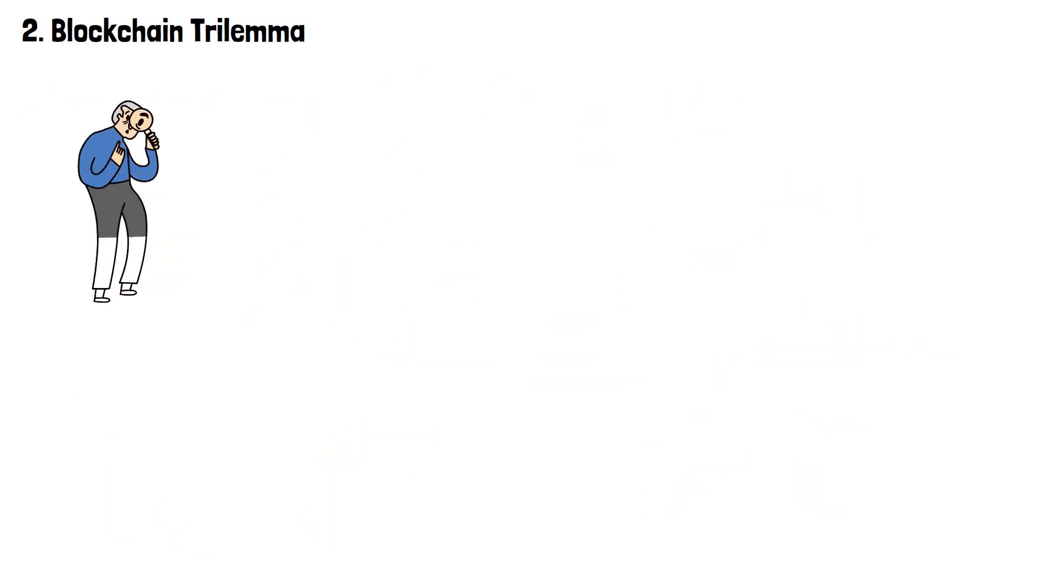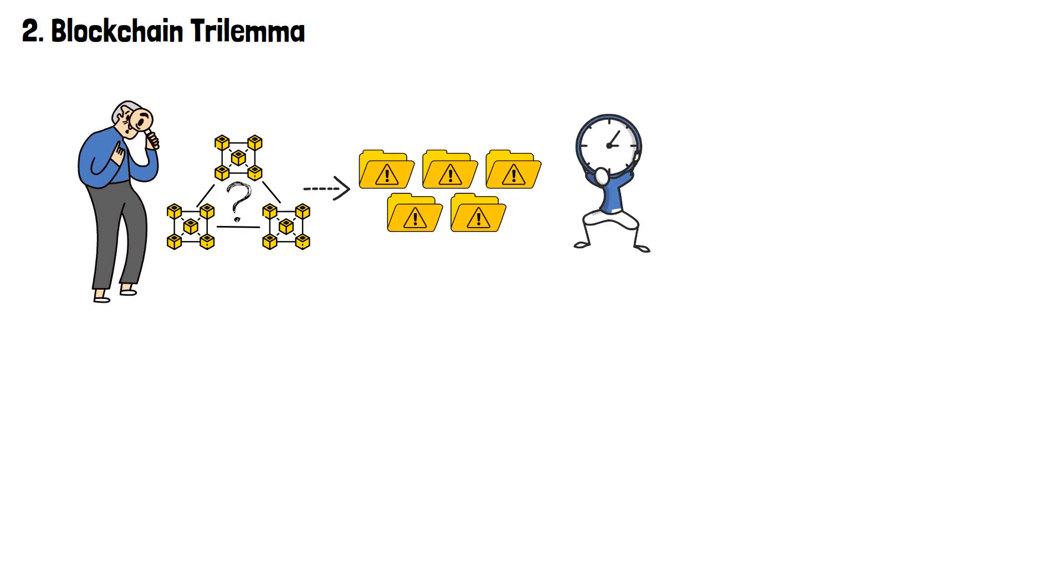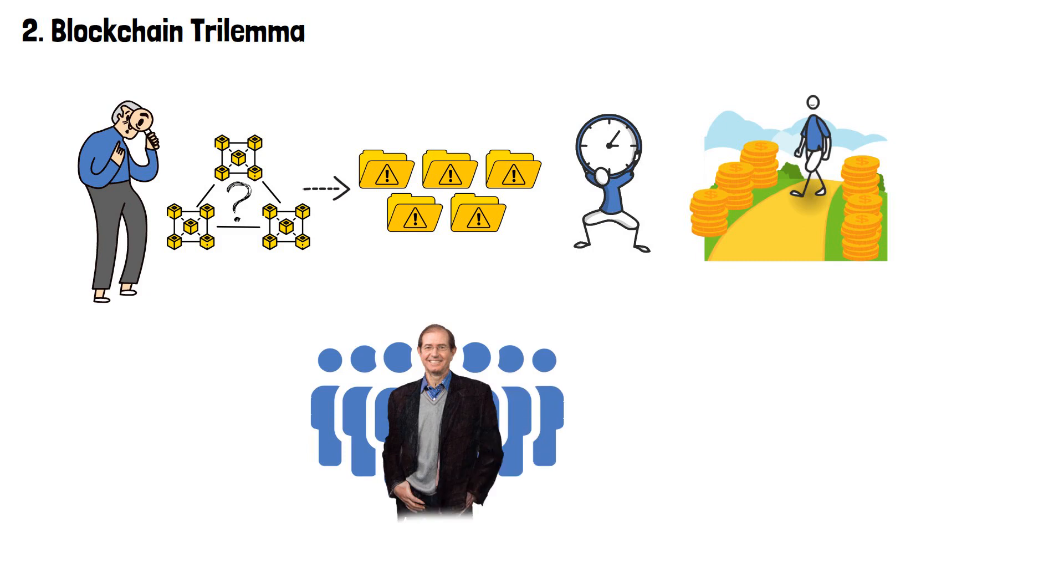So, as you can see, the blockchain trilemma is something that no blockchain project can avoid. It's waiting for everyone who dares to venture into this market. The minds behind Algorand knew this, so they prepared a solution to this problem.